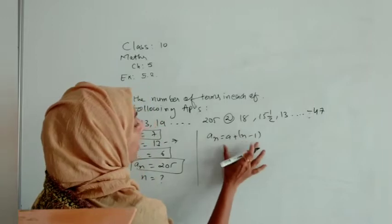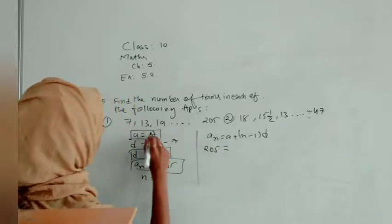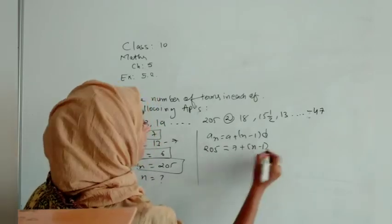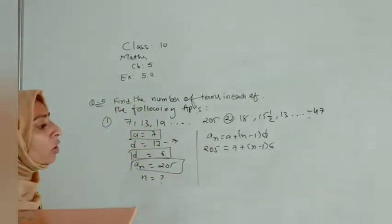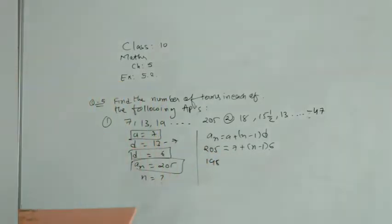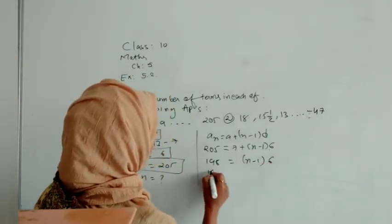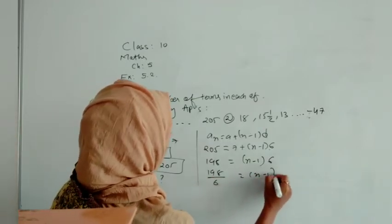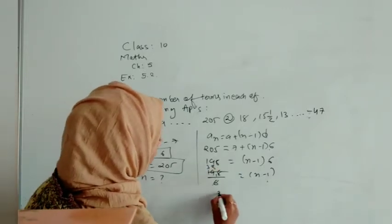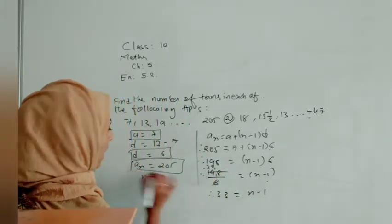Last term an is given as 205. Then read the question: finding number of terms means n we do not have, we have to find n. So how we will find that? An is equal to a plus (n minus 1) times d. You will get half of marks for this equation. So an is given as 205, a is given as 7, n minus 1 means we are not knowing, difference we got as 6.